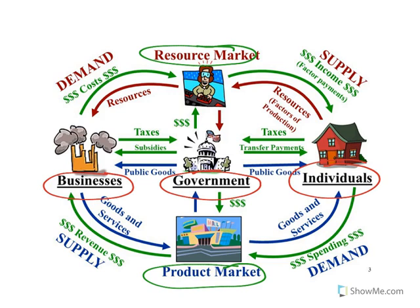Looking at the resource market: individuals or households contribute resources into the resource market. In a market economy, resources are privately controlled by individuals. In exchange, they receive income or factor payments — the money for those resources, such as rent and wages. On the other side, businesses receive the resources from individuals and in exchange pay those factor payments — the cost of the resources.